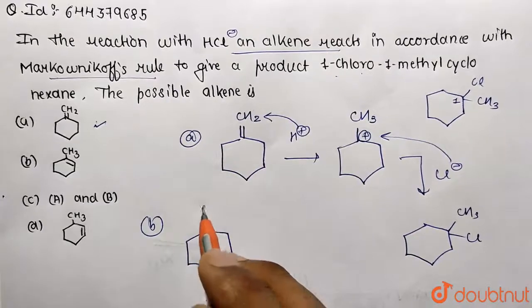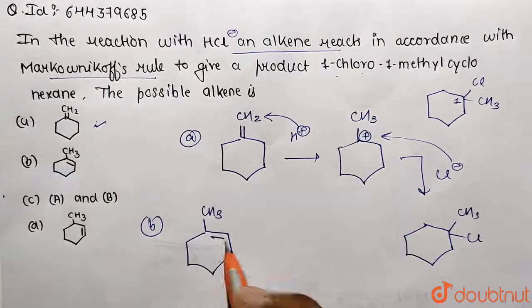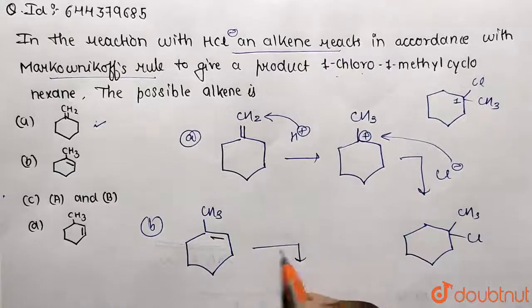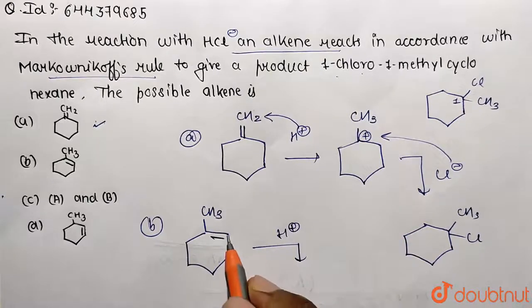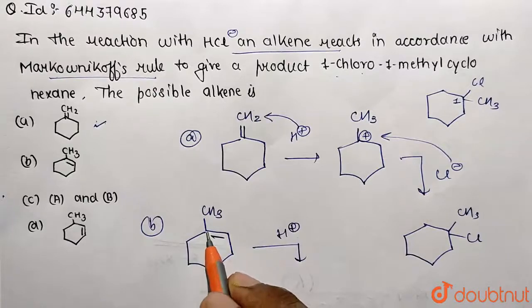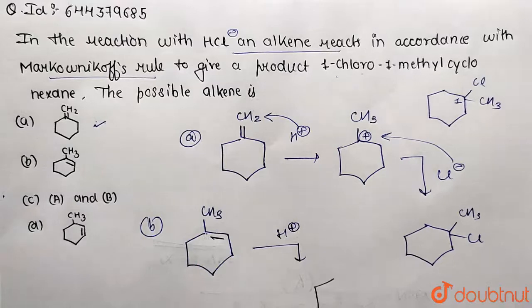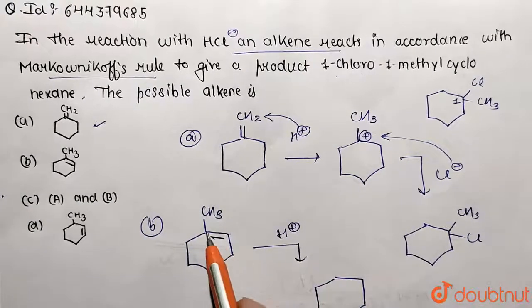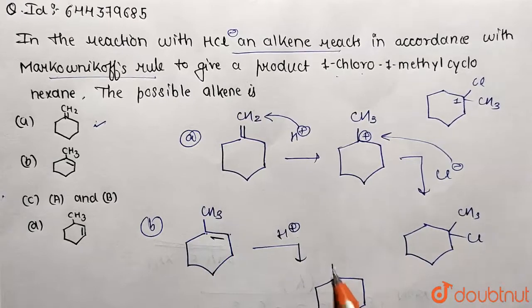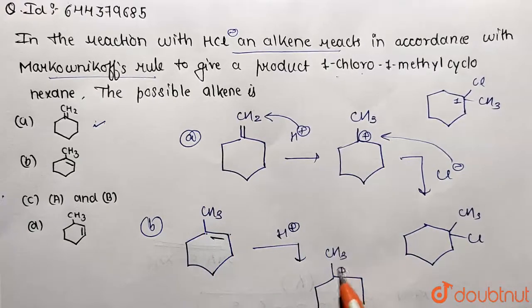Now check Option B, which contains a methyl group as the preformed group and double bond is present over here. First, H+ attack will occur either at this position or at this position. We need to find the stable carbocation. Stable carbocation will be formed when H is attacked on this position and carbocation will be formed on this position.